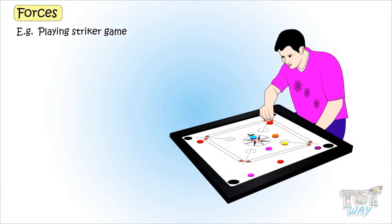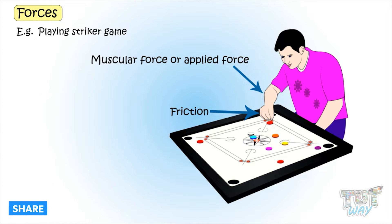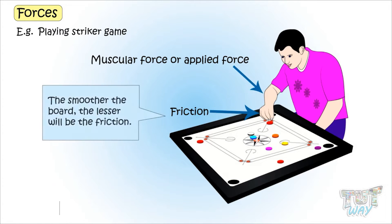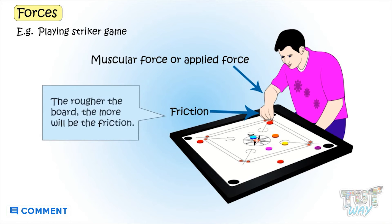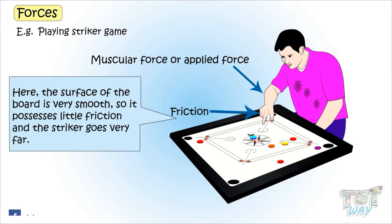We apply muscular force or applied force to move the striker ahead. Friction is always present when two objects are in contact, and here the striker and the board are in contact. The smoother the board, the lesser will be the friction, and the rougher the board, the more will be the friction. Here the surface of the board is very smooth, so it possesses little friction and the striker goes very far.